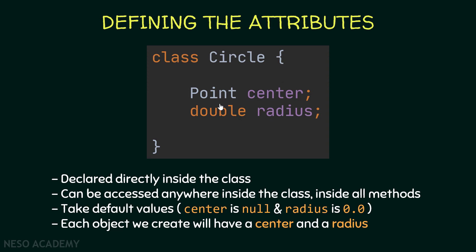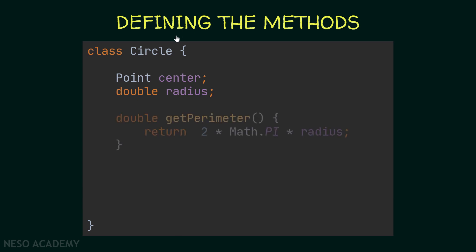Now let's define the methods. I'll start with the getPerimeter method — it returns a double, and inside it I'm returning 2 multiplied by Math.PI multiplied by the radius. The perimeter of a circle equals 2 × π × radius. I'm using the Math class in Java, accessing its static field PI using the dot operator. This method returns the perimeter of the circle object created using the Circle class.